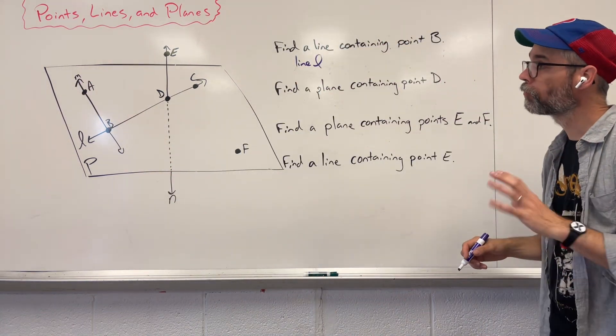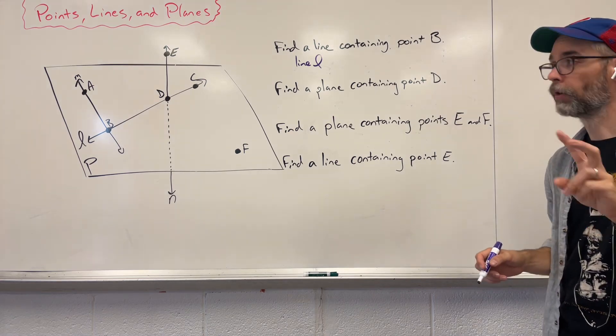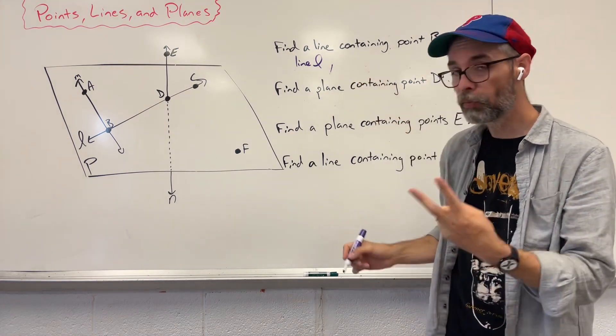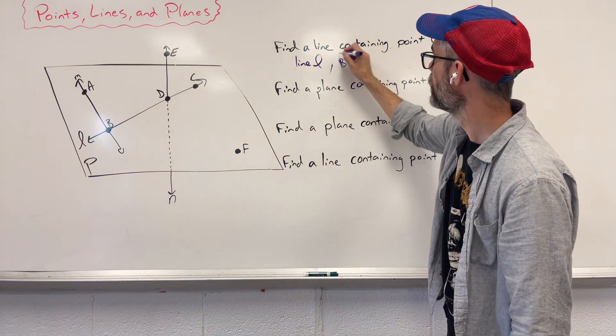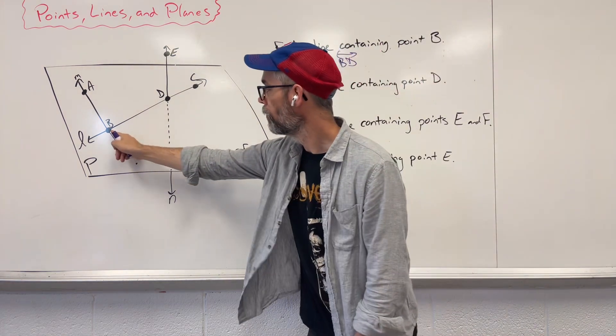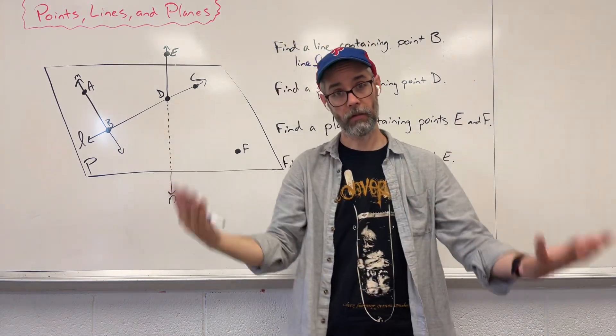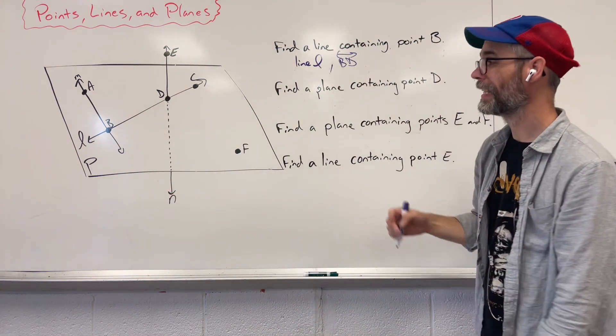You could also write this containing two points. So in order to write a line, you need two points. I could say BD with a line over it. BD contains line B or point B.